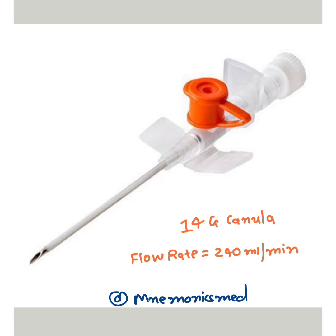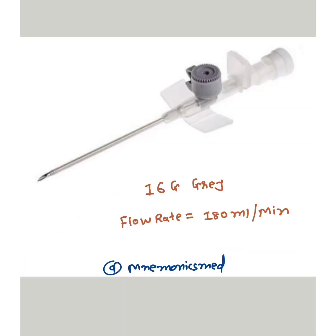This is the 14 gauge orange cannula — its flow rate is 240 ml per minute. By seeing this image you can remember it. This is the 16 gauge gray cannula — flow rate is 180 ml per minute. You have to remember this image to easily recall it.